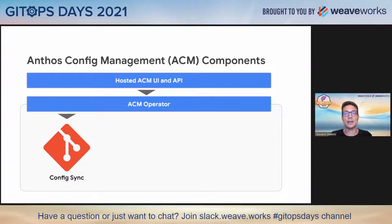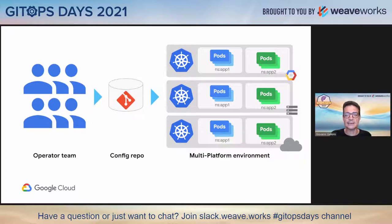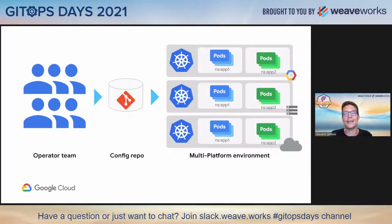Config sync is an operator running on the clusters that continuously syncs with a central Git repository — any repository that is Git compliant. It keeps the cluster configuration, across clusters of different types, continuously enforcing the centrally defined configuration and avoiding any local drift from happening.